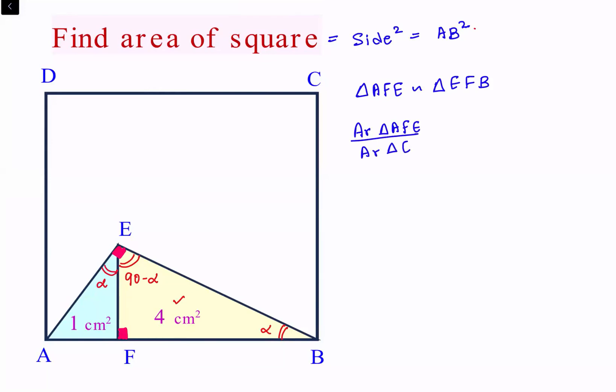is nothing but ratio of corresponding sides squared. So if you put the data, area of triangle AFE is 1 and for EFB it is 4.